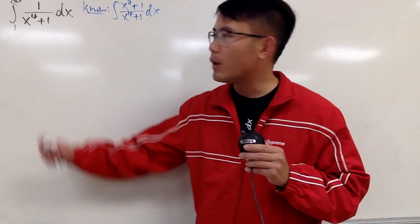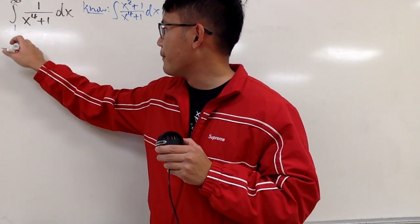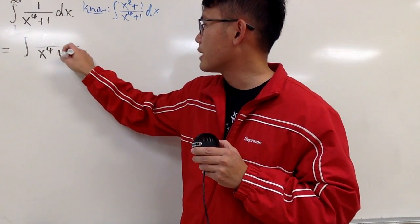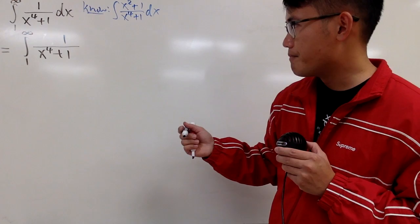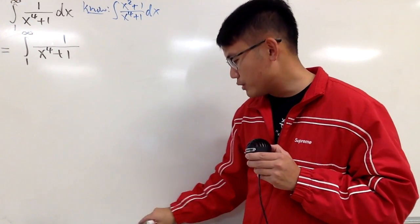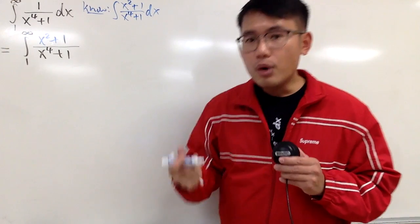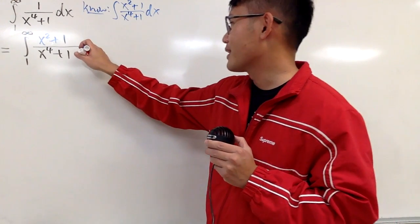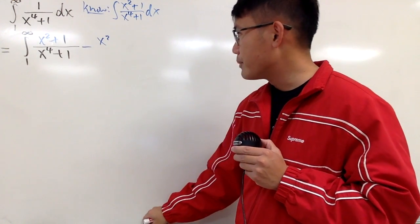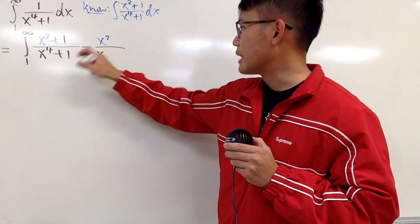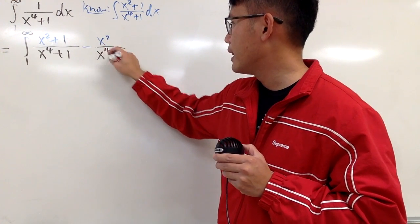My first step is to see how I can make this into that useful form. We have x to the 4th power plus 1 in the denominator, and the numerator is 1. I need to get an x squared term — I'll just add x squared and then subtract x squared, so nothing changes. This is still equivalent to the original. I'll separate this as two fractions over the same denominator, x to the 4th power plus 1.